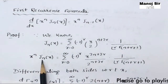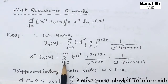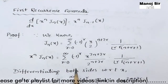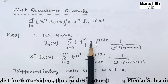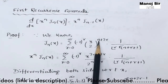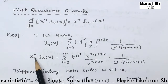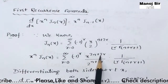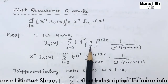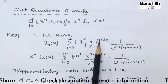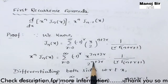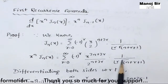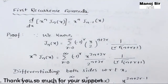Now we multiply x^n on both sides. So x^n times J_n(x) equals summation r=0 to infinity of (-1)^r. The power of x is n+2r; multiplying by x^n gives x^{2n+2r}, divided by 2^{n+2r} times r! times Gamma(n+r+1).